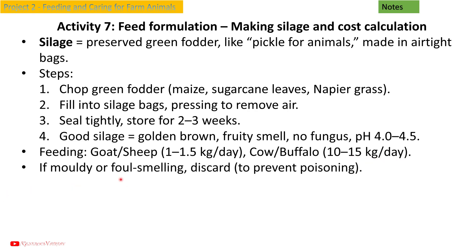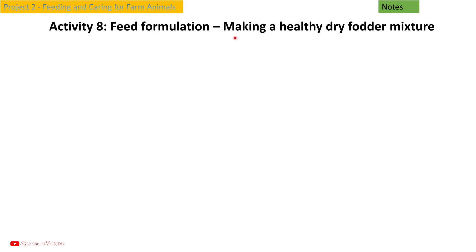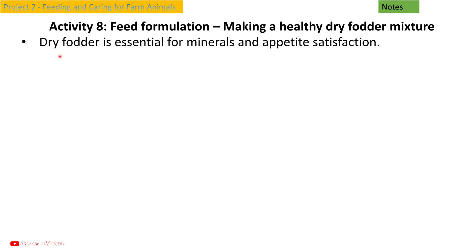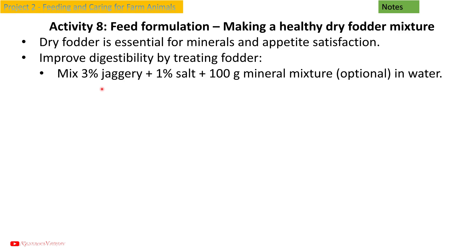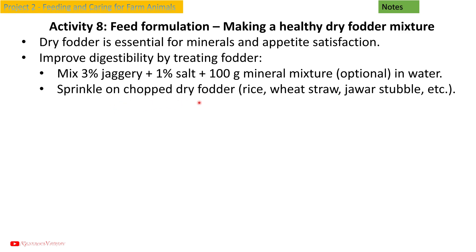If silage is moldy or foul-smelling, discard it to prevent poisoning. Activity 8: Making a healthy dry fodder mixture. Dry fodder is essential for minerals and appetite satisfaction. Improve digestibility by treating fodder — mix 3 percent jaggery, 1 percent salt, and 100 grams mineral mixture (optional) in water, then sprinkle on chopped dry fodder such as rice straw, wheat straw, or jwar stubble. Store for 2 to 3 hours before feeding. This increases palatability and nutritional value.